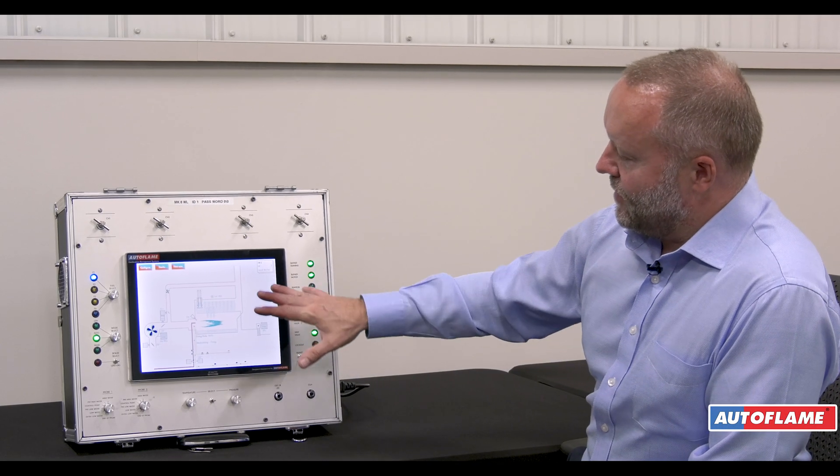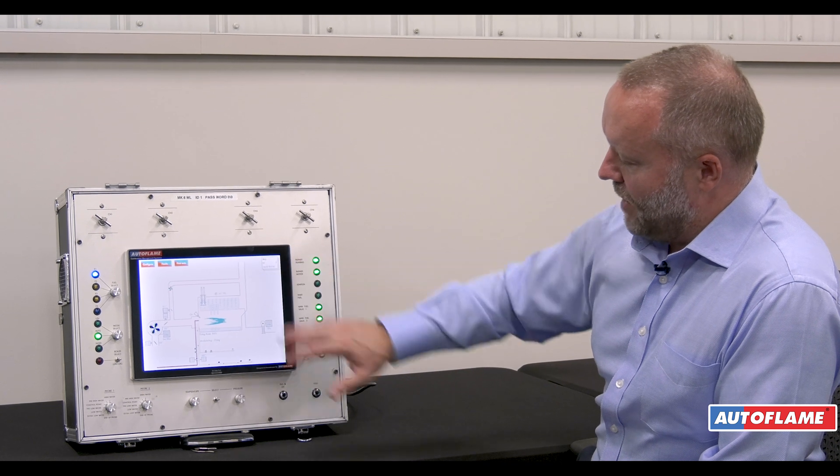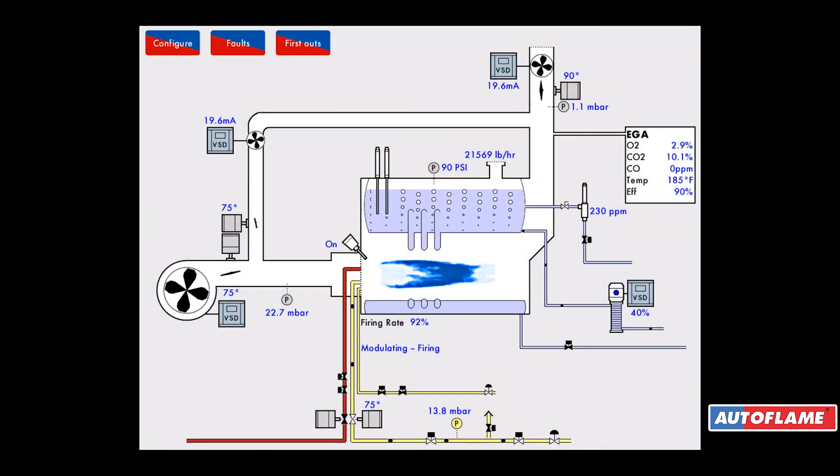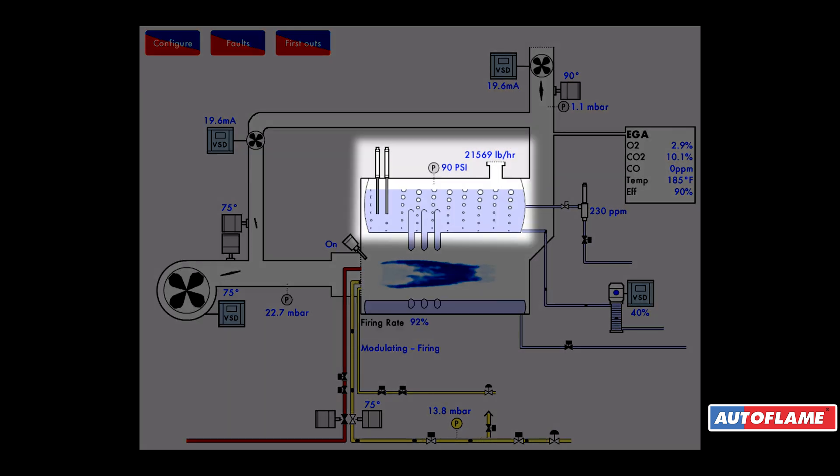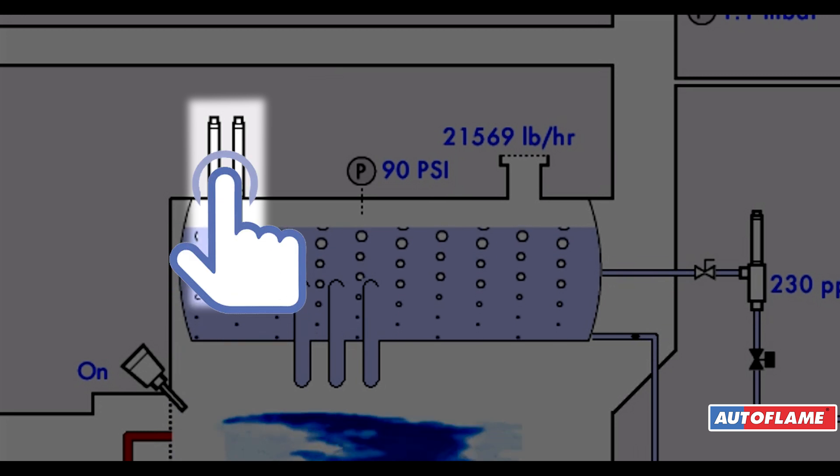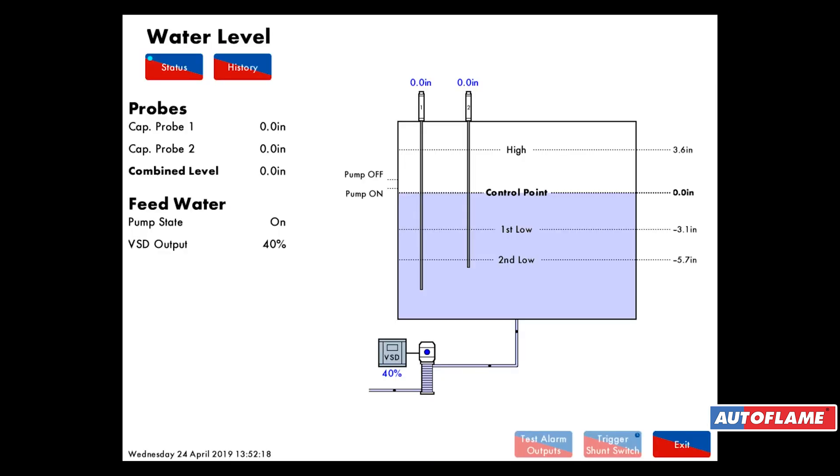Looking at this screen, we're looking at the water level side of the boiler. This is set up as a water tube, so we've got a mud drum down the bottom and a steam drum at the top. We've got two probes for looking at water level using capacitance probes.